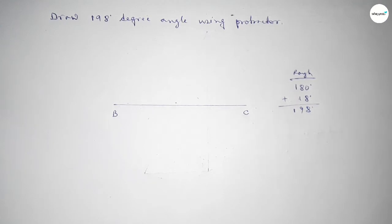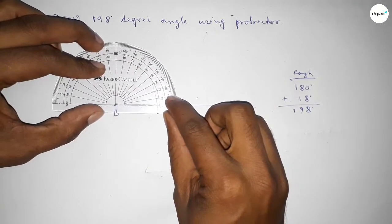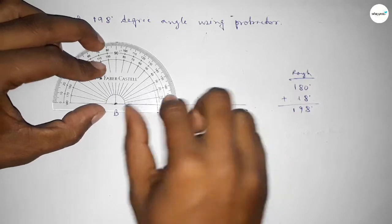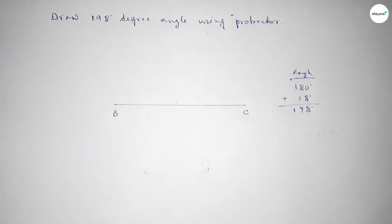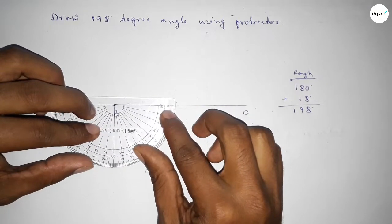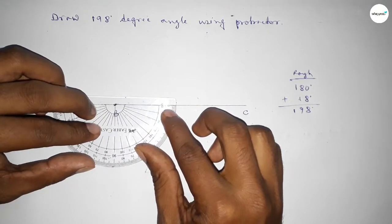So first counting 180 degree angle. Putting the protractor on the point B by this way and counting 180 degrees. So this is 180 degrees. Plus, putting the protractor on the point B by this way and counting 18 degree angle.